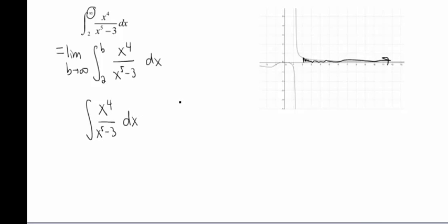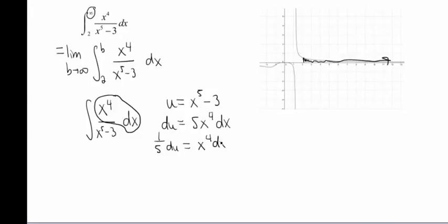I'm looking at this one, I think I'm going to need some u substitution. So let's let u be the denominator, x to the 5th minus 3. So du is going to end up giving us 5x to the 4th dx. Well, I have my x to the 4th dx in my integral, so all I have to do is get rid of this 5. So that's going to become 1/5 du is going to be x to the 4th dx.